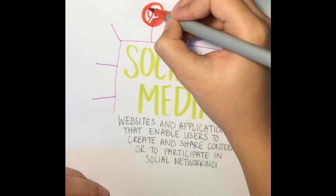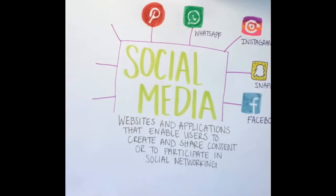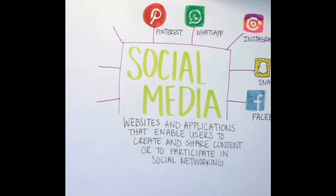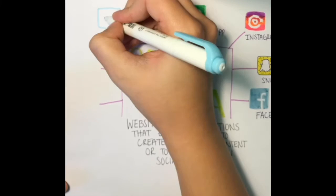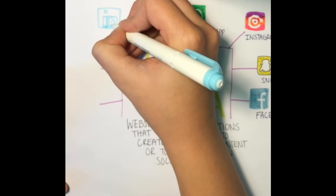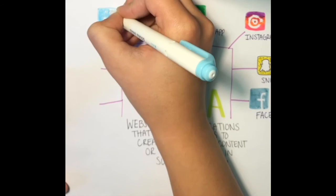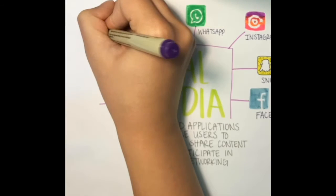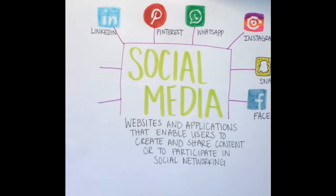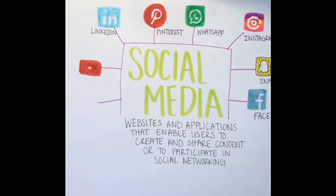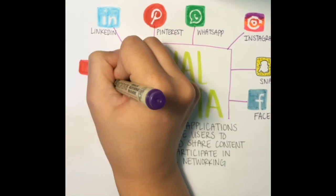Bookmarking sites allow people to organize and save links or photos to other resources — this is how the tag came into play. An example of this would be Pinterest. Microblogging allows people to share short stories or phrases on their wall or page. For example, Twitter.